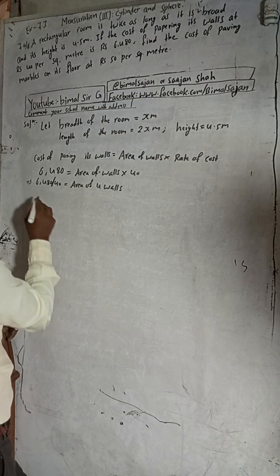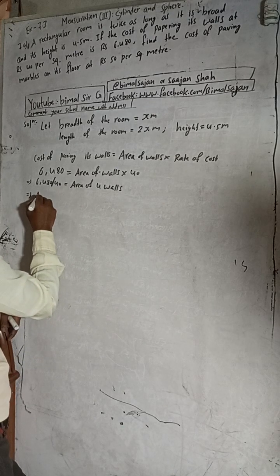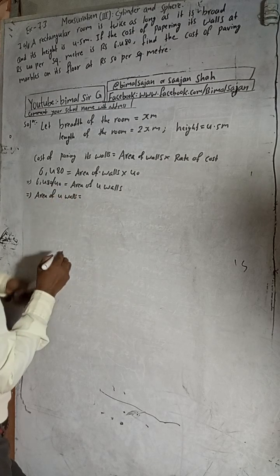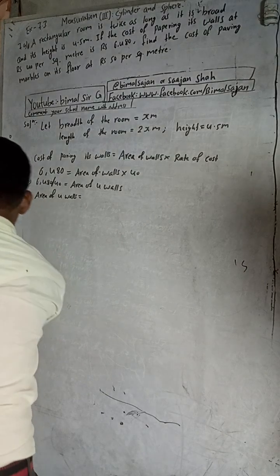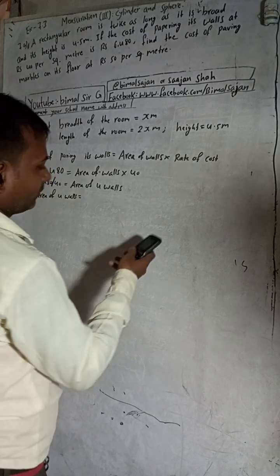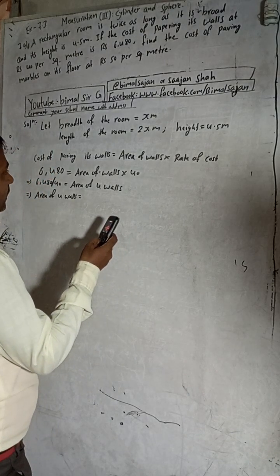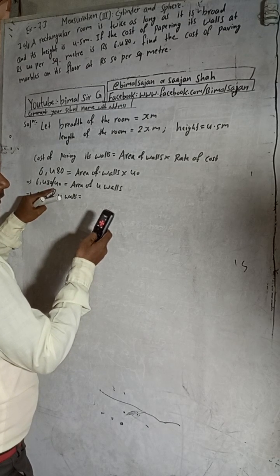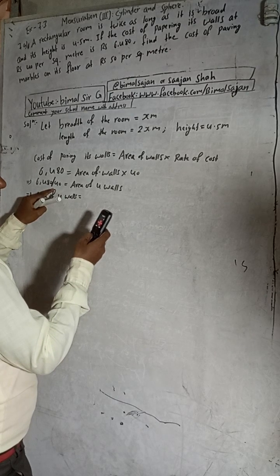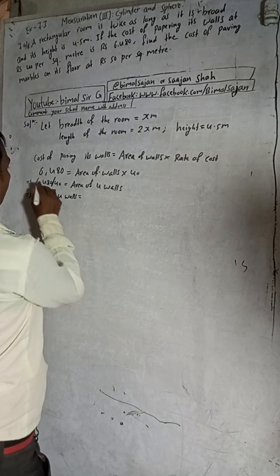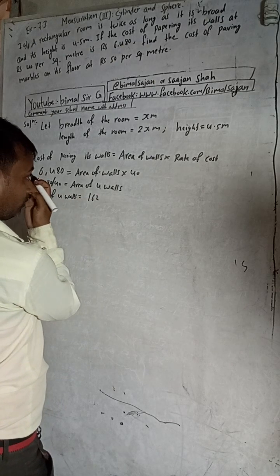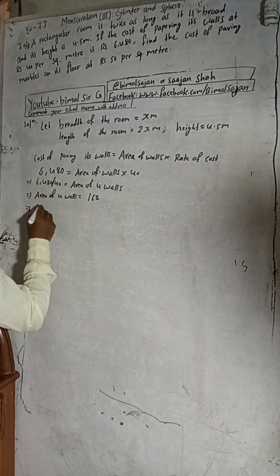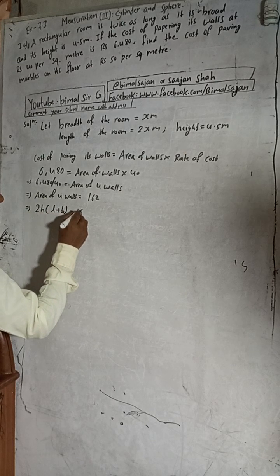Area of 4 walls = 6,480 ÷ 40 = 162 square meters. The formula for area of 4 walls is 2H(L + B), so: 2 × 4.5 × (2x + x) = 162.